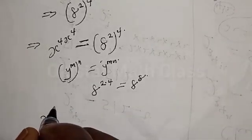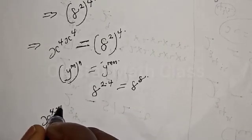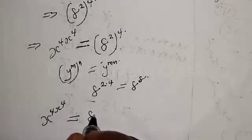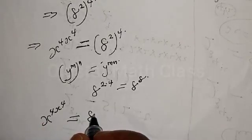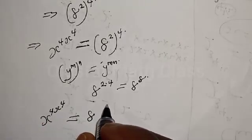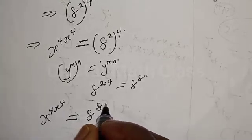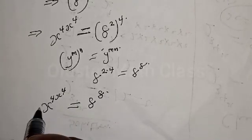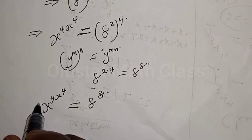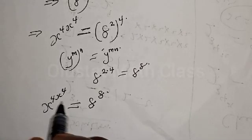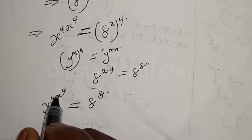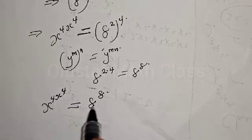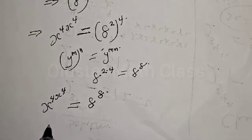So we now have s raised to power 4 times s raised to power 4 is equal to 8 raised to power 8. Here we have the base s raised to power 4 equal to 8, and also the exponent s raised to power 4 equal to 8. By comparing both sides, this implies that s raised to power 4 is equal to 8.